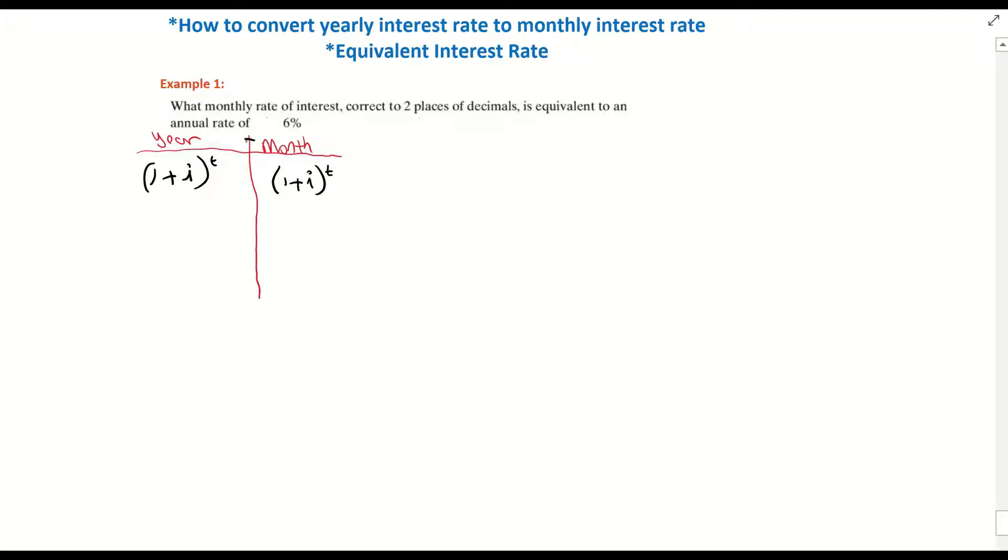So I'm looking at (1 + i) to the power of t for the year and also for the month, and I'm going to put an equal sign between these. Now we know that the interest rate for the year is 6%. And to turn 6% into a decimal, we divide by 100. So we get 0.06. So this now becomes (1 + 0.06) to the power of 1 year, which is to the power of 1. And this is equal to (1 + i) to the power of 12 to represent 12 months, which is equivalent to 1 year.